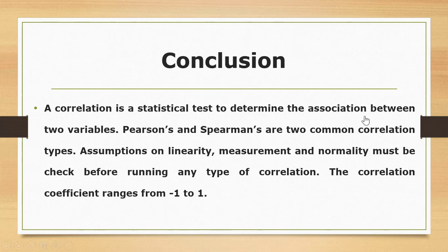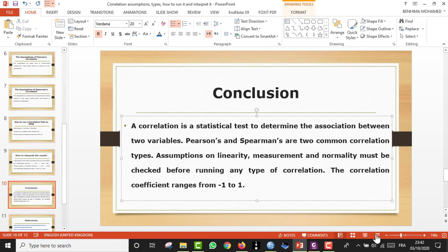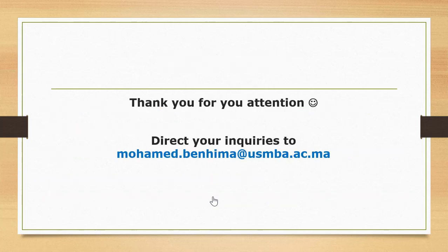In conclusion, correlation is a statistical test to determine the association between two variables. The two common types are Pearson's and Spearman's correlation, though others like Kendall's tau exist. Assumptions of linearity, level of measurement, and normality must be checked before running any correlation. The coefficient ranges from negative one to one. If you have questions, post them below and see you in another tutorial.